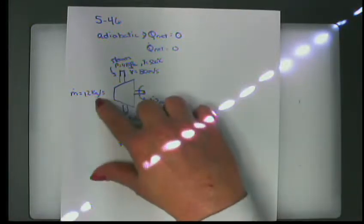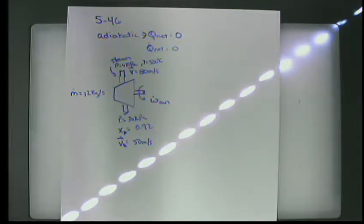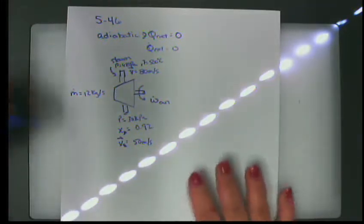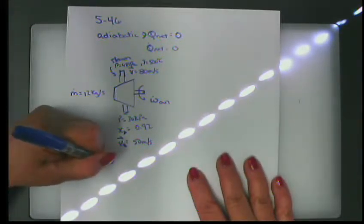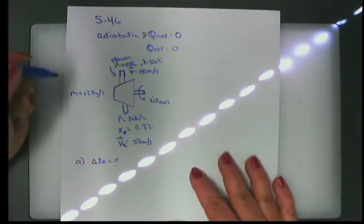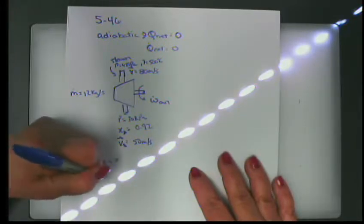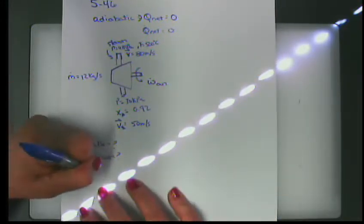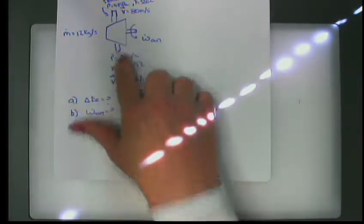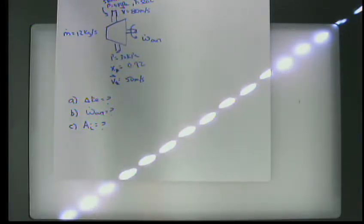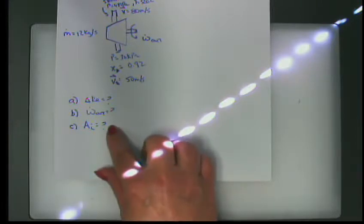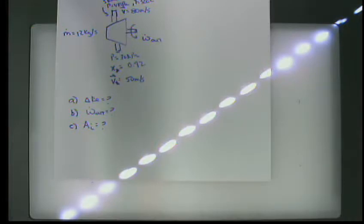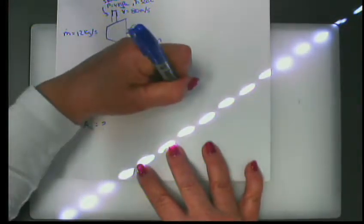Since turbines don't accumulate or discharge mass, the mass flow rate in equals the mass flow rate out. The problem asks us to determine: the change in kinetic energy, the power output, and the turbine inlet area. This is a first law plus conservation of mass problem. Let's write the first law of thermodynamics for a control volume.